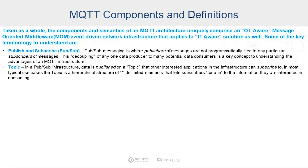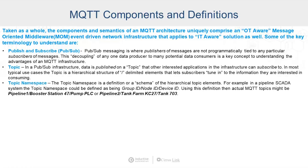The second thing we need to understand is the topic. In a PubSub infrastructure, data is published on a topic — a hierarchical slash-delimited number of elements that lets us either tune in or tune out of the information we're interested in consuming. If we take a topic and define it in a hierarchy, we can call that a topic namespace. The topic namespace is a schema of the topic elements we want to standardize on. For example, in a pipeline SCADA system, the topic namespace could be defined as a group ID, a node ID, and a device ID. Actual MQTT topics might be something like pipeline1/booster-station-47/pump-PLC, and you can see where you can subscribe to either all of pipeline 1, all of booster station 47, or specifically down to a pump PLC.